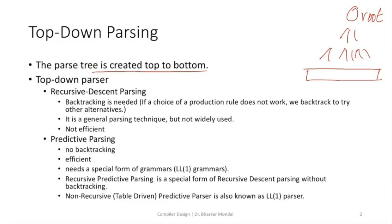There are two kinds of top-down parsers: one is called recursive descent parsing, and another is called predictive parsing.